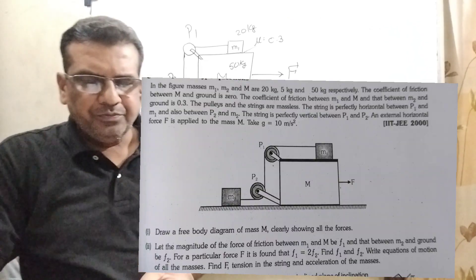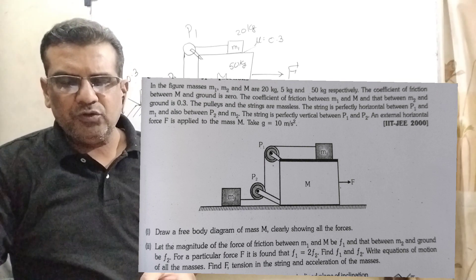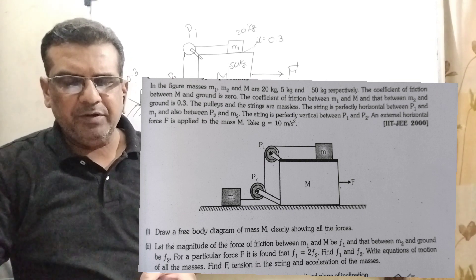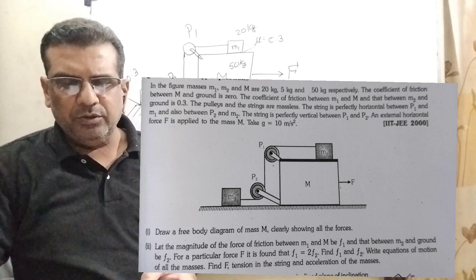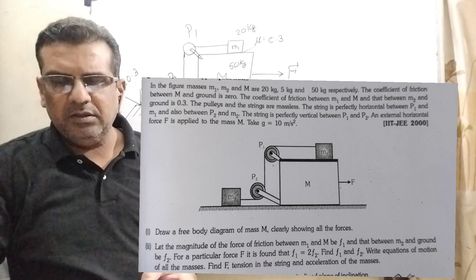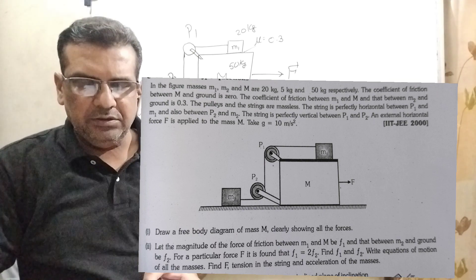Now here is the question. In the figure, masses M1, M2 and M are 20 kg, 5 kg and 50 kg respectively. The coefficient of friction between M and ground is 0. The coefficient of friction between M1 and M and that between M2 and ground is 0.3.